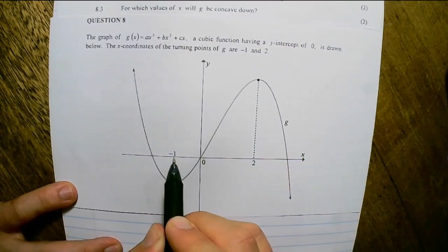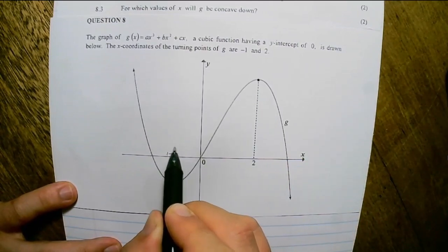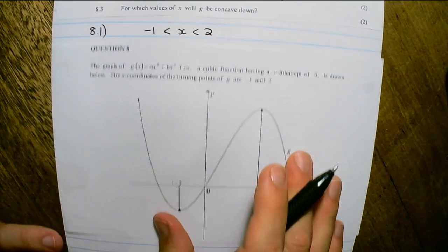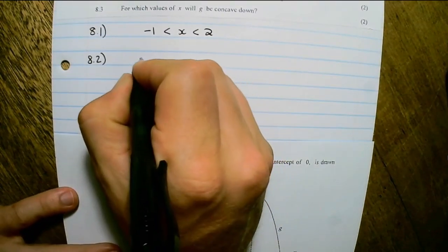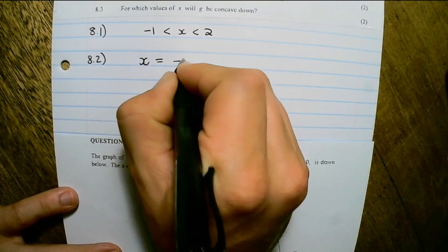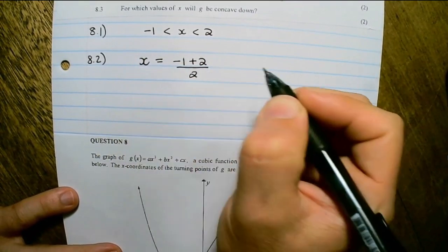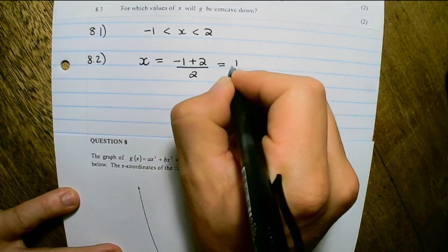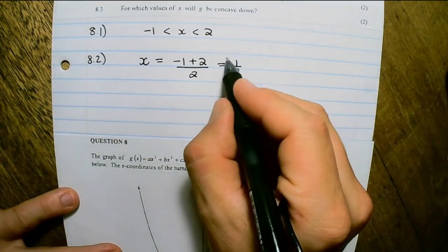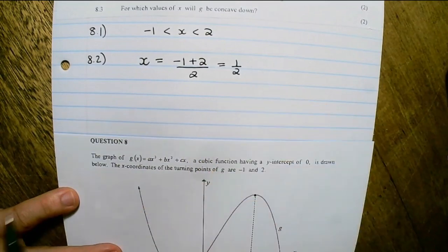So the point of inflection would be exactly in the center of negative 1 and 2. So x would be negative 1 plus 2 divided by 2. That equals one half. So this is the x coordinate of the point of inflection.